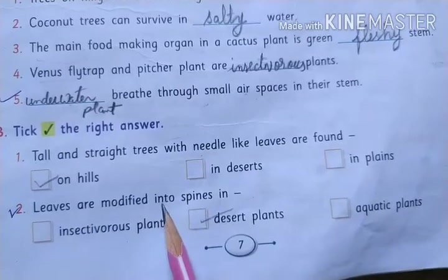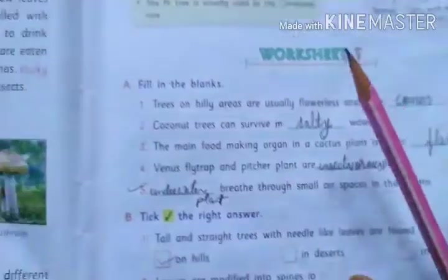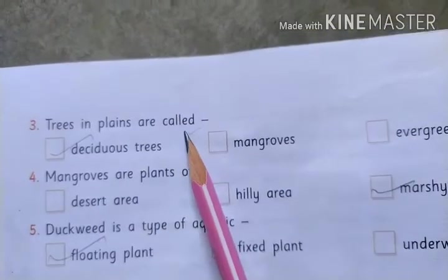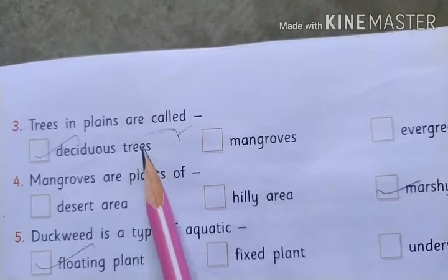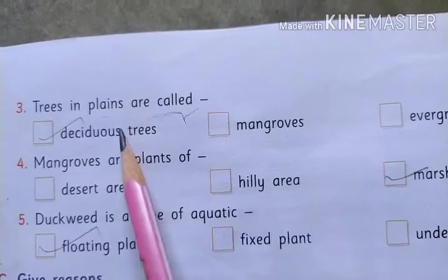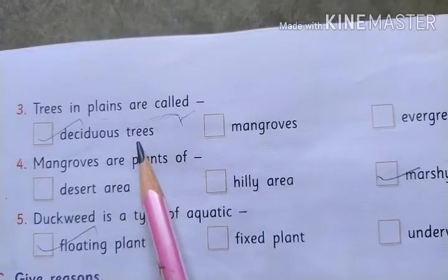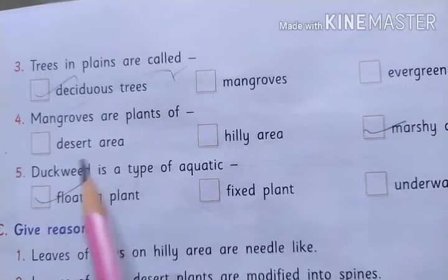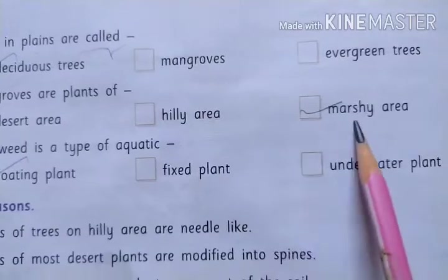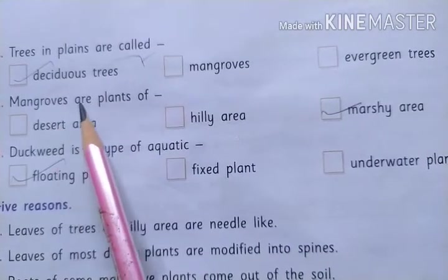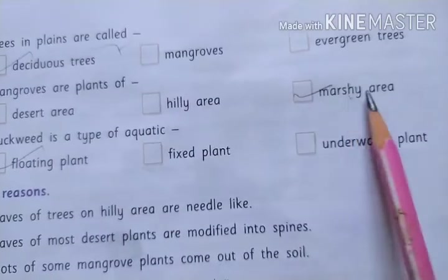Third: trees in plains are called deciduous trees — meaning trees that have many branches and give us shade. Mangrove trees are plants of which area — desert area, hilly area, or marshy area? The answer is marshy area.